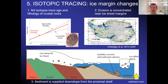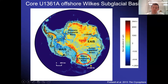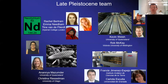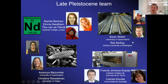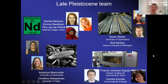This approach is applied to core U1361A from offshore the Wilkes Subglacial Basin, recovered during an IODP expedition around a decade ago. This is an interdisciplinary team effort — at Imperial we did isotopic provenance, while Kevin Welsh and Rob MacKay handled sedimentology, Ananiya and Christina worked on diatoms for environmental constraints and age models, and Carlotta and Francis contributed XRF scanning. Multiple tools are needed to know where we are in time and to trace the palaeoenvironment.